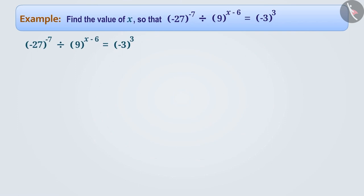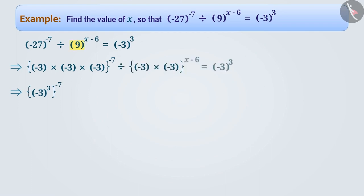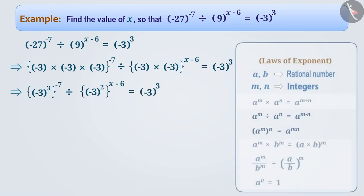We know that minus 27 can be written as (minus 3) × (minus 3) × (minus 3), which in exponential form is (minus 3) to the power 3. Similarly, to get an equal base for the second term, 9 can be written as (minus 3) × (minus 3), that is (minus 3) to the power 2. So the expression becomes: (minus 3) to the power 3, whole to the power minus 7, divided by (minus 3) to the power 2, whole to the power (x minus 6), equals (minus 3) to the power 3. Here, the rule a to the power m, whole to the power n, equals a to the power m×n will be used.